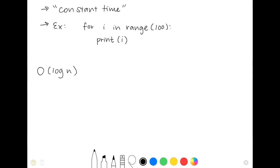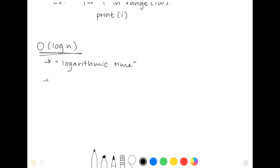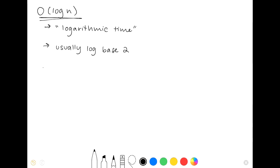Next, we have O of log n, which is called logarithmic time. Note that in computer science, a logarithm is usually log base 2 rather than 10. O of log n functions will typically look something like as follows.